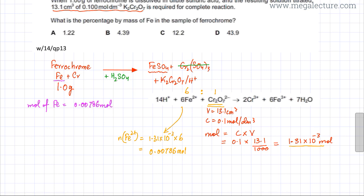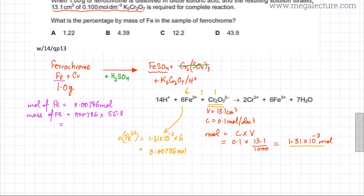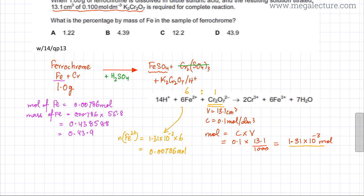To find the percentage mass of Fe in ferrochrome, we first find the mass of Fe. Mass of Fe = moles of Fe × Ar of Fe = 0.00786 × 55.8 = 0.438588 grams, which rounds to 0.439 grams to three significant figures.